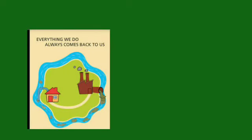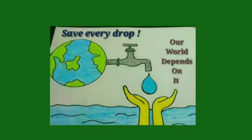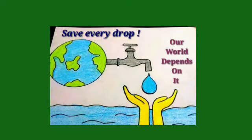Everything we do always comes back to us. If you throw garbage in the water, it will come back to us and then we have to clean it, filter it, and then drink it. We should learn to save every drop of water because our world depends on it. Be careful while using water. Now we will read from the textbook.